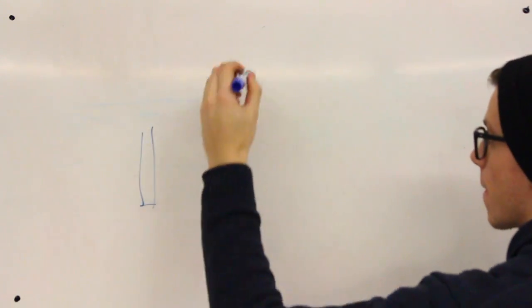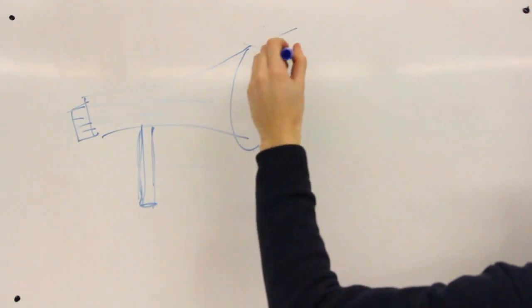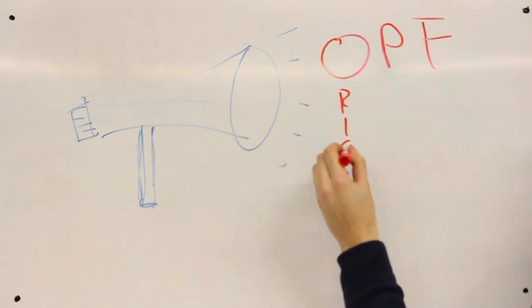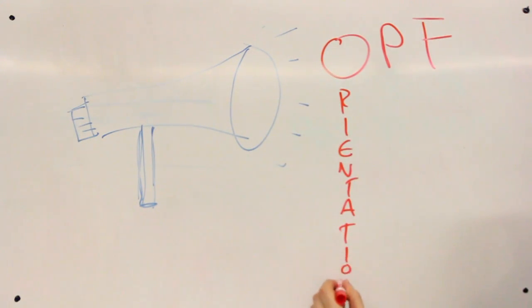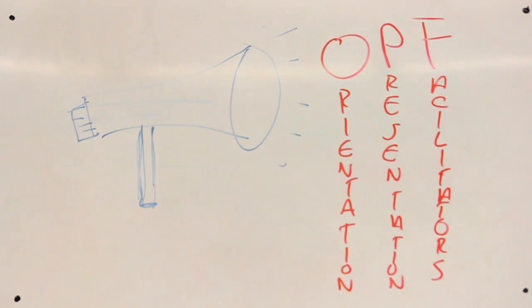Orientation Presentation Facilitators, or OPFs, are the creative glue of Orientation. These volunteers will write, edit, record, and perform the eight different presentations seen by new students over the course of Orientation. These volunteers will work in teams of four or five to create presentations in order to educate and entertain the new students.